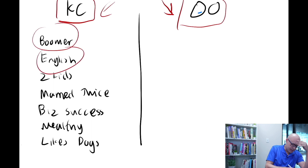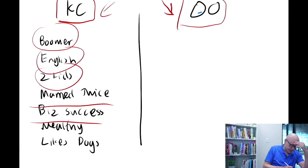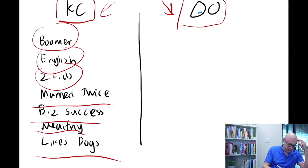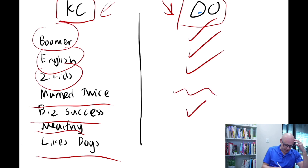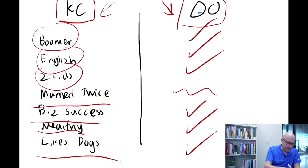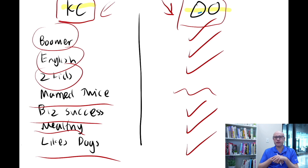King Charles: he's a boomer, he's English, he's got two kids, married twice, business success, wealthy, likes dogs. Ozzy Osbourne: boomer, English, two kids, married — that's a small detail in the grand scheme of things — business success, wealthy, likes dogs. In other words, these two people — King Charles and Ozzy Osbourne — are demographically very similar.